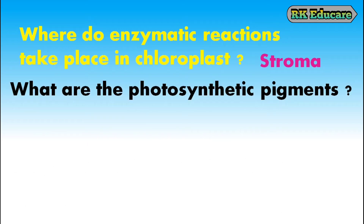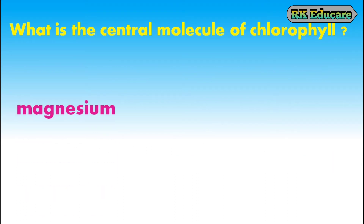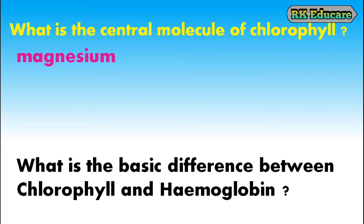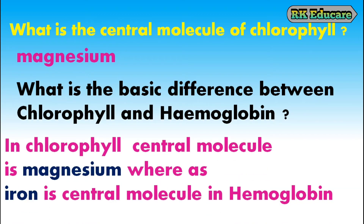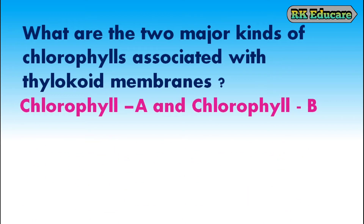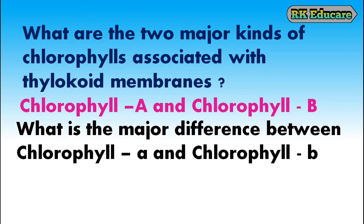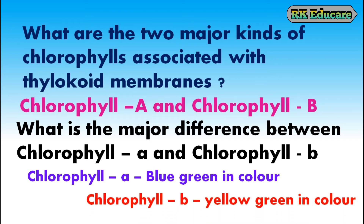What are the photosynthetic pigments? Substances found in chloroplasts which capture sunlight are called photosynthetic pigments. What is the central molecule of chlorophyll? Magnesium is the central molecule of chlorophyll. What is the basic difference between chlorophyll and hemoglobin? In chlorophyll the central molecule is magnesium, whereas iron is the central molecule in hemoglobin. There are two kinds of chlorophylls associated with thylakoid membranes: chlorophyll A and chlorophyll B. Chlorophyll A is blue-green in color; chlorophyll B is yellow-green in color.